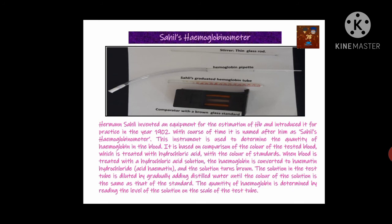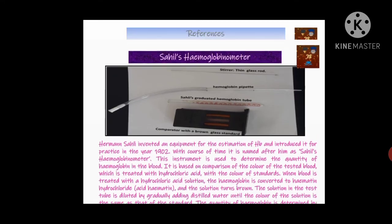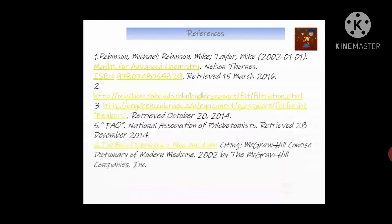The mixture of HCl and blood is converted into acid hematin, which turns the color brown. This Sahli's graduated hemoglobin tube is placed in the middle of the comparator box, and drop by drop distilled water is added to dilute the solution. The color is then compared with two reference color columns in the comparator box. This is a completely manual process, useful for field conditions where electricity is not available, as the entire apparatus comes packed in a portable box.